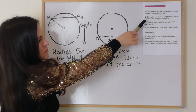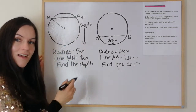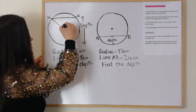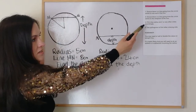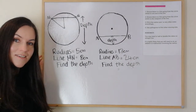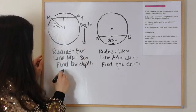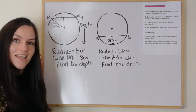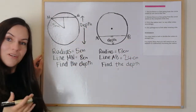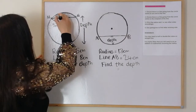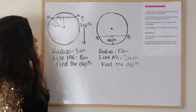Step two: ensure there's a line going from the circle centre to the midpoint of the line. Here's the circle centre and the midpoint of the line would be up here. Step three: fill in the radius and/or any other sides accordingly. We're given the radius, so that's five centimetres. We know line MN from here to here is eight, but we need to half it, so it becomes four.